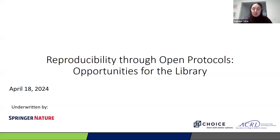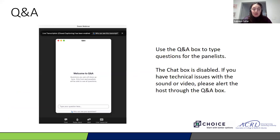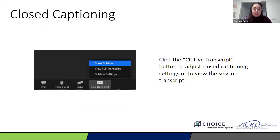Before we get started, I'd like to point out a few features of the webinar software. All attendees are automatically muted and cameras are off, so don't worry about generating any noise or feedback. In the main area of the screen you can follow along with the presentation materials, and you can use the divider in the middle of the screen to adjust slide or video sizes. We are using the Q&A feature today — please use it to ask questions or share comments. We'll answer as many questions as we have time for at the end. Closed captioning is available via the CC button on the bottom right corner. Please note that we are recording today's program and everyone who registered should receive a follow-up email with a link to the archive version.